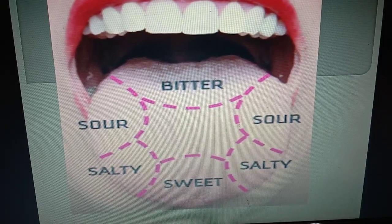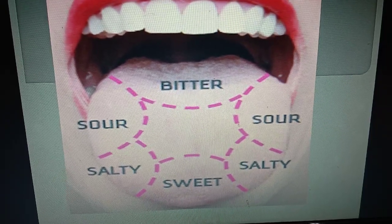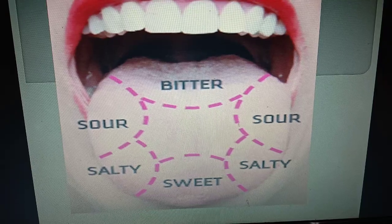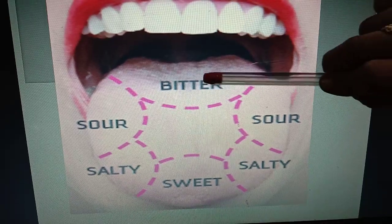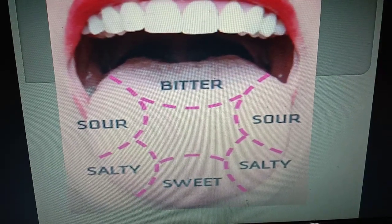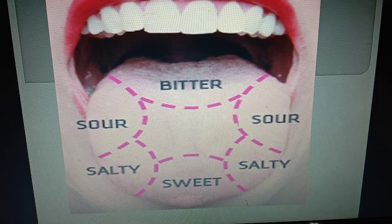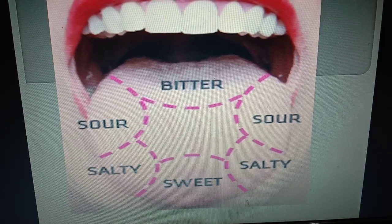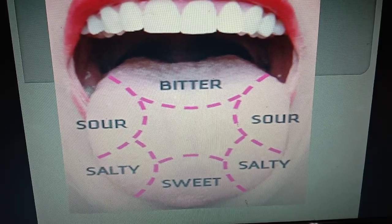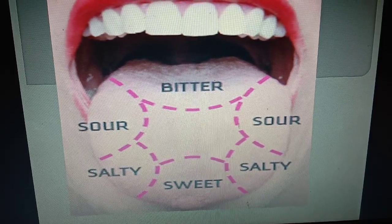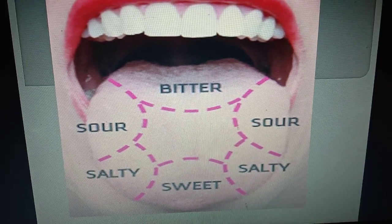And the bitter receptors — they are located at the back of the tongue. So children, when you eat, taste and enjoy your food instead of talking.